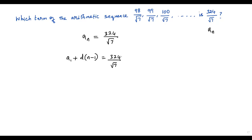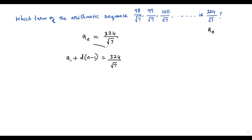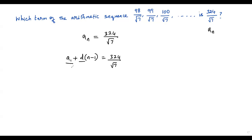Our goal in this equation is to find the value of n. For example, if we get n = 155, then it would be the 155th term. To find n, we need to plug in the values for a1 and d. Here, a1 is the first term of the given arithmetic sequence, which is 98/√7.